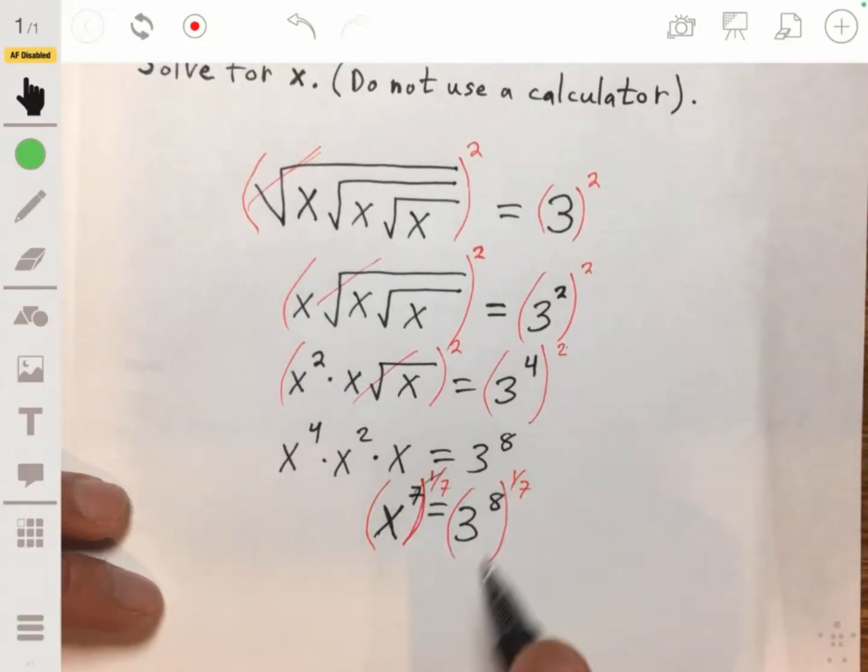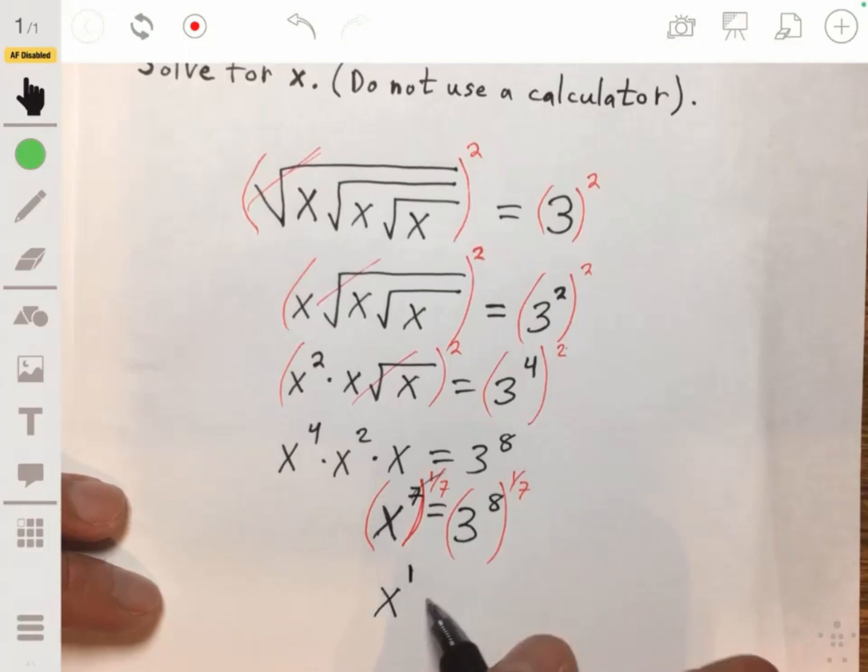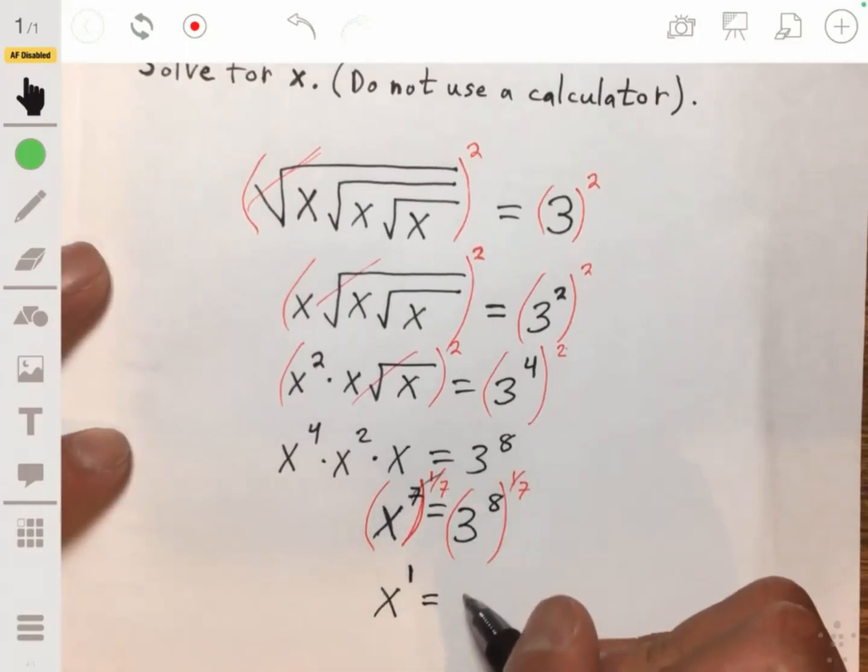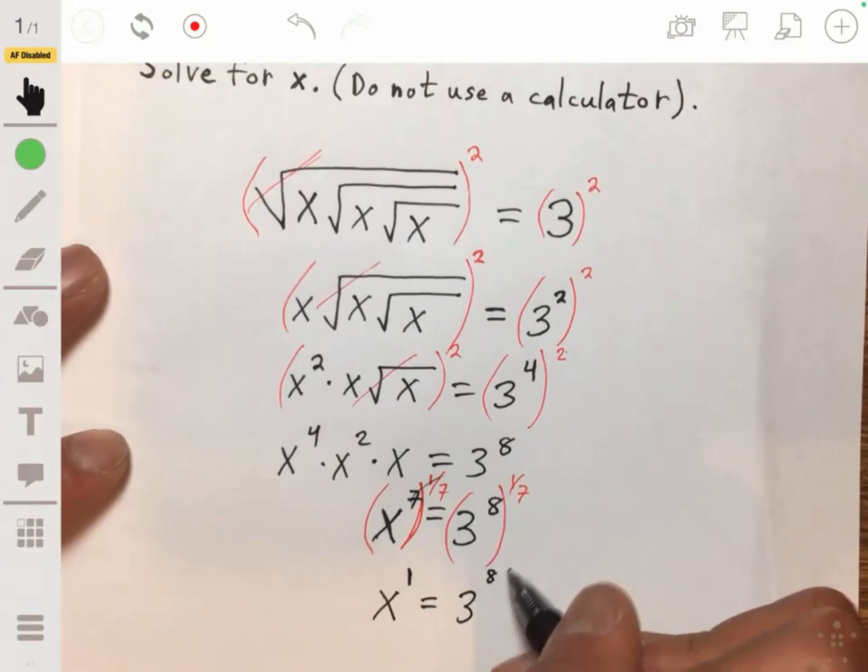Multiplying 7 by one-seventh, this makes it a 1. So it's just x to the 1, or just x. And we'll have 3 to the eight-sevenths on the right.